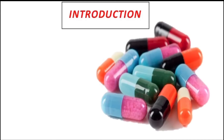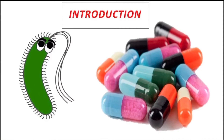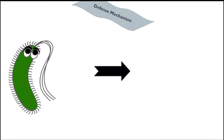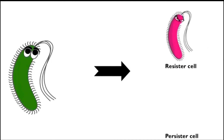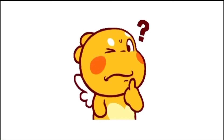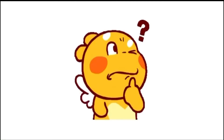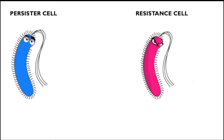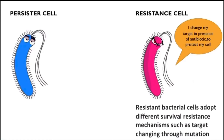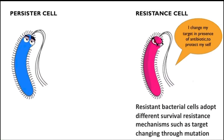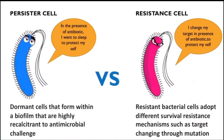In the presence of antibiotics, bacteria will develop different defense mechanisms, such as producing resistant cells and persister cells. Resistant bacteria cells adopt different survival mechanisms, such as target changing through mutation. While persister cells are defined as dormant cells — dormant meaning inactive, no cell function — that form within a biofilm and are highly tolerant to antibiotics.